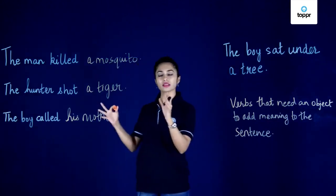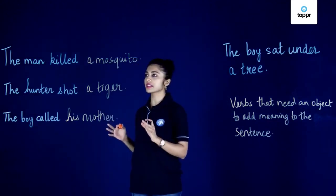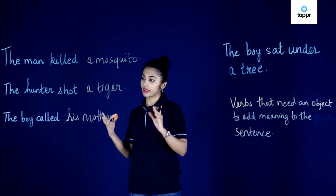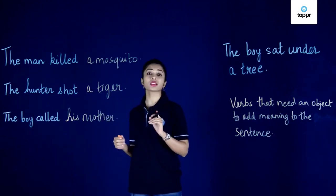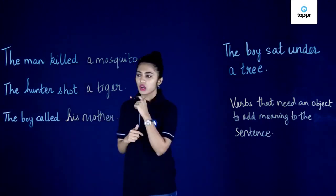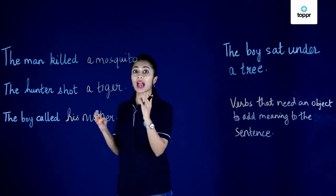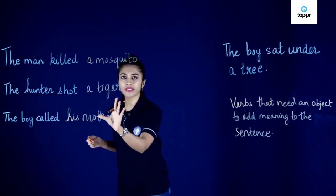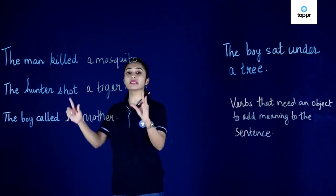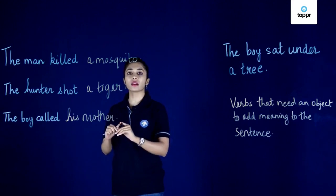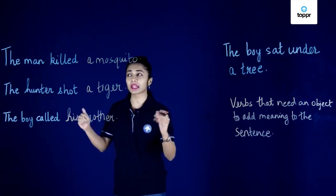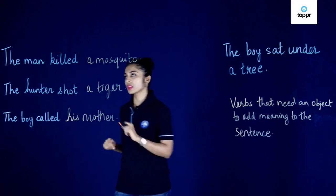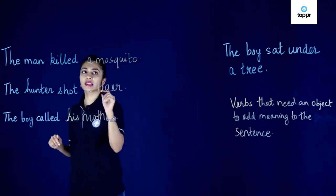So we have our sentences here. The first sentence is the man killed a mosquito, the hunter shot a tiger, and the third sentence is the boy called his mother. We've added some things here and given these sentences meaning and made them complete. Let's take a look at the first sentence: the man killed a mosquito.